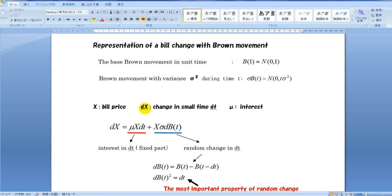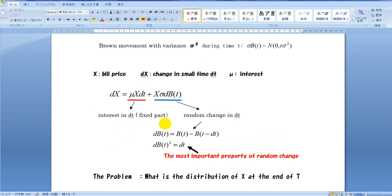Let X be a bill price and dX is a change in small time dt and mu be an interest. Then dX is represented as follows. This is the fixed part. This is the random change part. Where dB(t) is the difference of Brownian value at time T and T minus dt. And the most important property of random change is dB(t) squared equals dt.